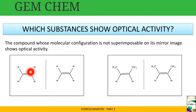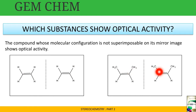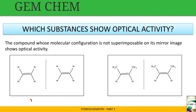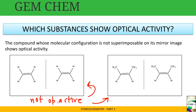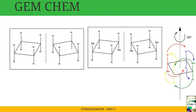Now if we consider this molecule and its mirror image, when we put one over the other it is superimposable. Similarly for these other examples, putting one above the other also yields a superimposable result. So these are not optically active because they are superimposable mirror images, and the criterion for optical activity is that mirror images must be non-superimposable.